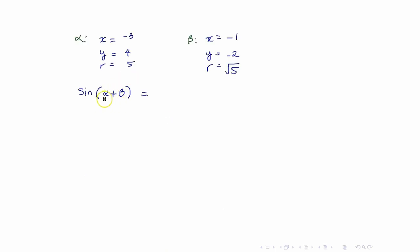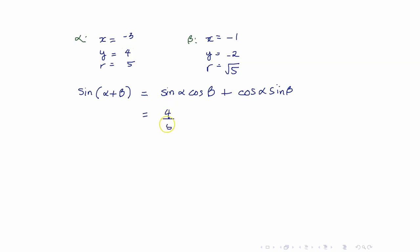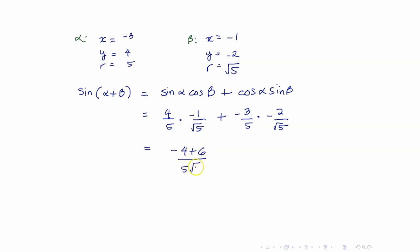Now let us evaluate sine(α+β). Using the formula: sine(α+β) = sine α · cosine β + cosine α · sine β. Sine α = 4/5, cosine β = −1/√5, cosine α = −3/5, sine β = −2/√5. So we get (4/5)(−1/√5) + (−3/5)(−2/√5) = (−4 + 6)/(5√5) = 2/(5√5).